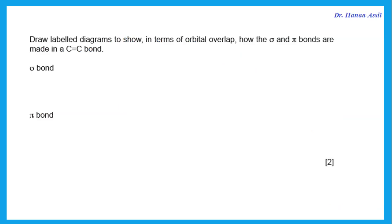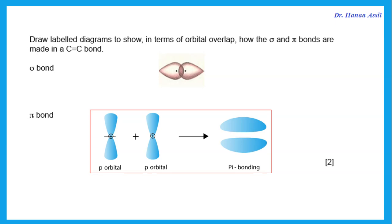Draw labeled diagrams to show in terms of orbital overlap how the sigma and pi bonds are made in a double bond between two carbons. Remember, the sigma bond is head-to-head overlap while the pi bond is a lateral or side-to-side overlap between p orbitals.